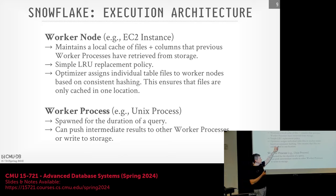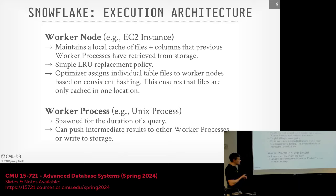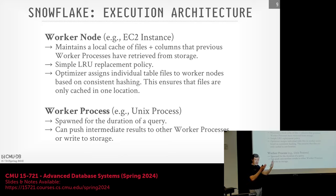To manage cache consistency, distribute data evenly, and scale up and down without reshuffling everything as in a shared-nothing architecture, they rely on consistent hashing to track which worker node is responsible for which persistent data in their own cache. When a query arrives, they fire off a new worker process — literally a new OS process spawn — which executes tasks for that query, reads and writes intermediate results to other workers or S3, and gets killed when the query is done.